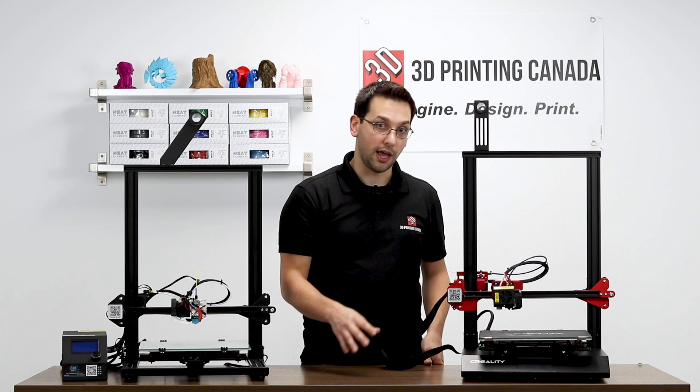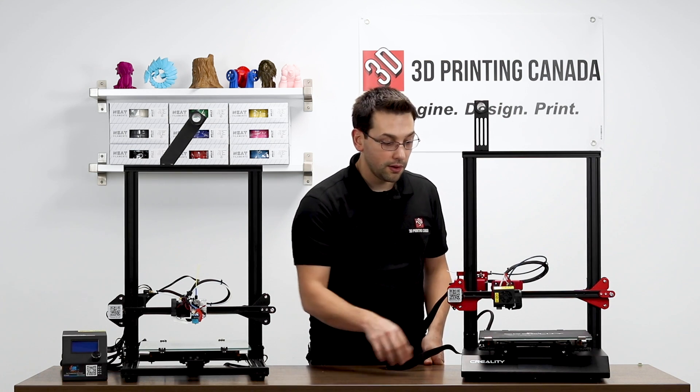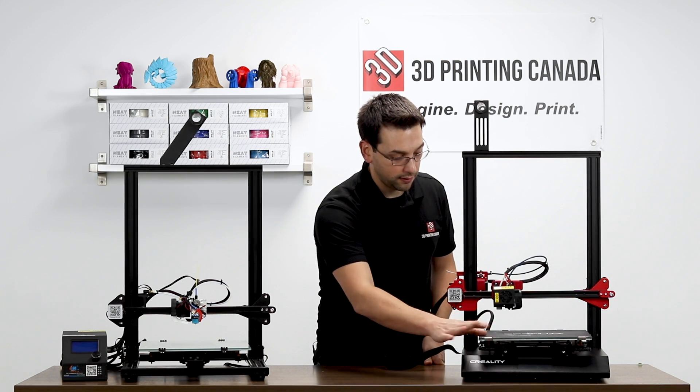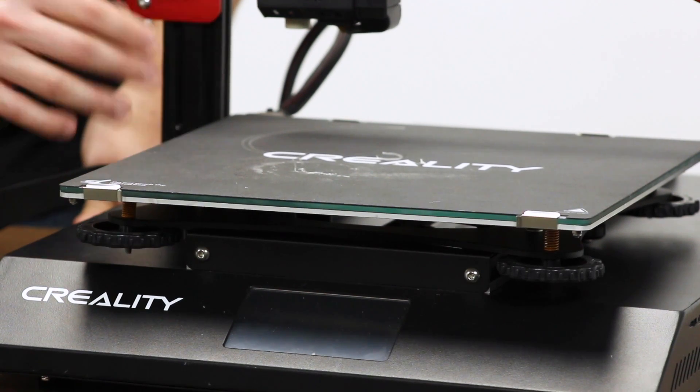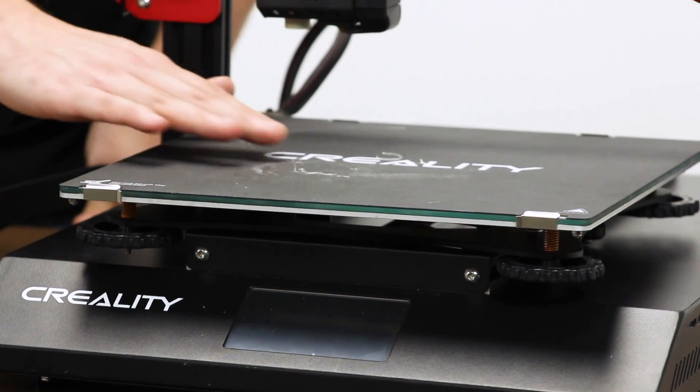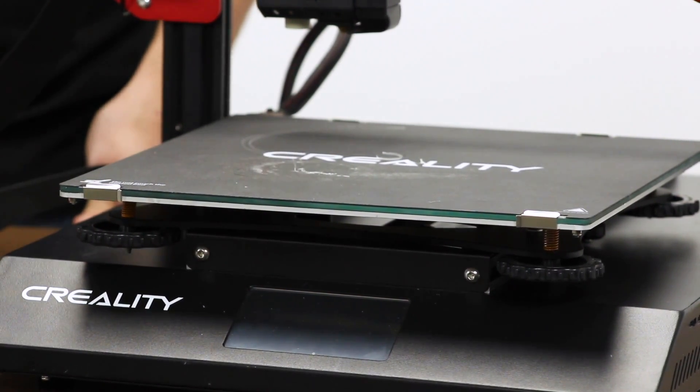You know, they have the magnetic build surface with the Ender 3, so that's kind of easy replacement. So that'll be a bit of a chore, but this unit here is perfectly flat. It's a nice unit, and we have absolutely no adhesion problems, that's for sure.